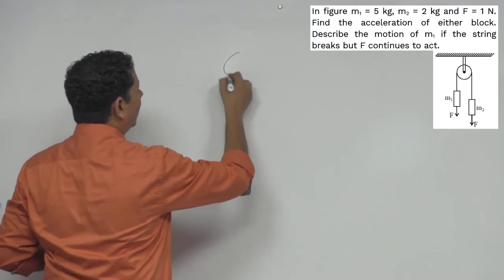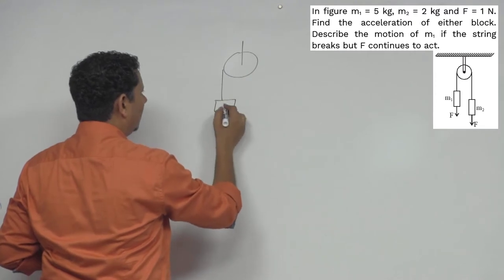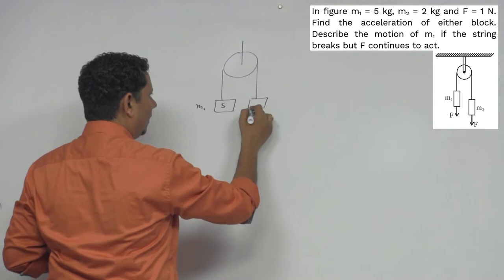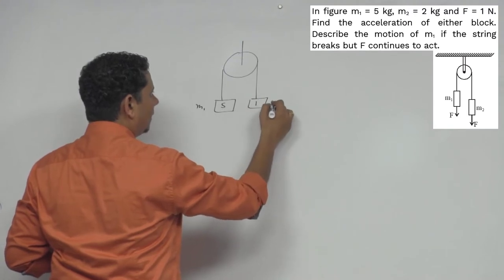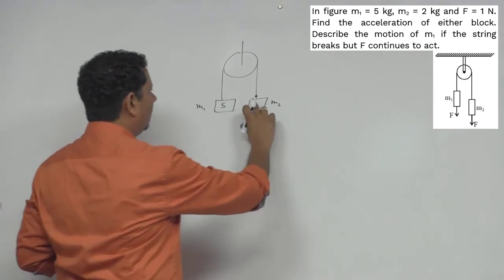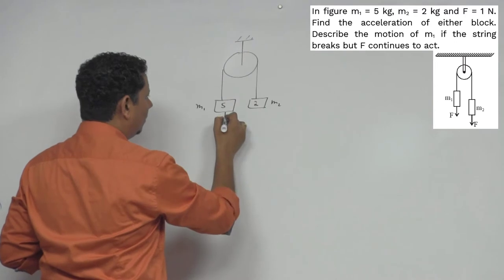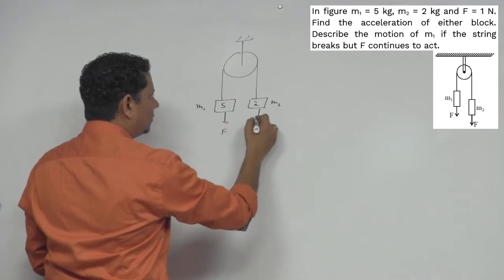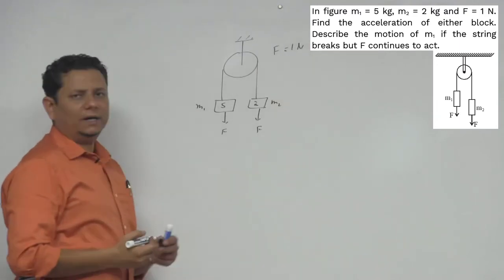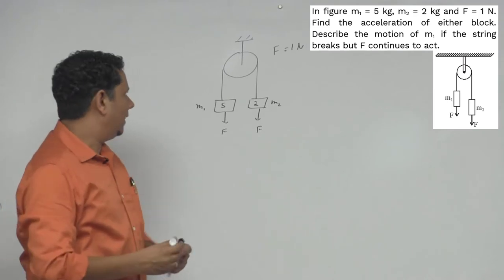So yes, the scenario is that you have a block, say a 5 kg block m1, and a 2 kg block m2. And there's a pulley P. On both you have force F whose value is given here, one Newton. Both pe ek F force lag raha hai. We have to find what will be the acceleration of the blocks.